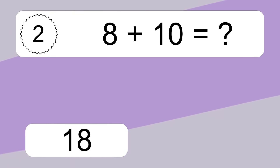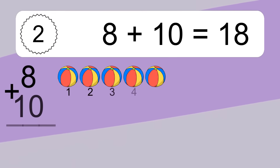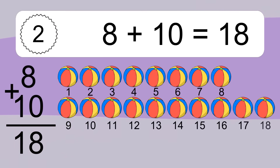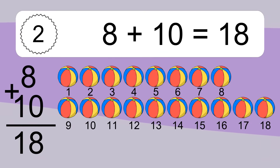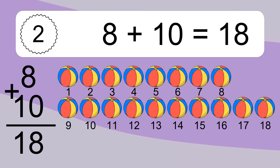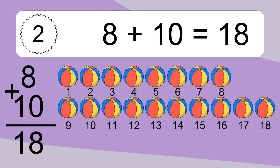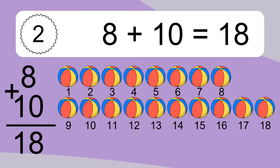8 plus 10 equals what? 8 plus 10 equals 18. Let's count it: 1, 2, 3, 4, 5, 6, 7, 8, 9, 10, 11, 12, 13, 14, 15, 16, 17, 18.